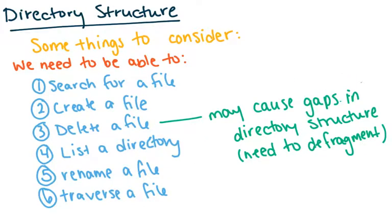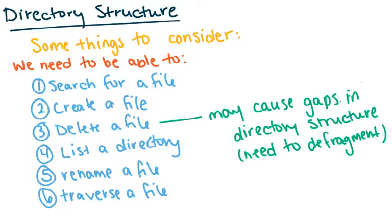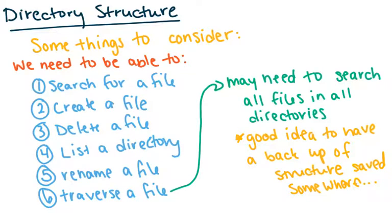Deleting a file may cause a gap in the directory, so then we need to defragment. Traversing a file system means we may need to search all files and all directories for a certain file, which can cause issues. Some implementations are going to be more easily searchable than others. In general, it's a good idea to have a backup of the structure saved somewhere, because if it ever gets corrupted, you're no longer going to be able to search for things or know where anything actually is.